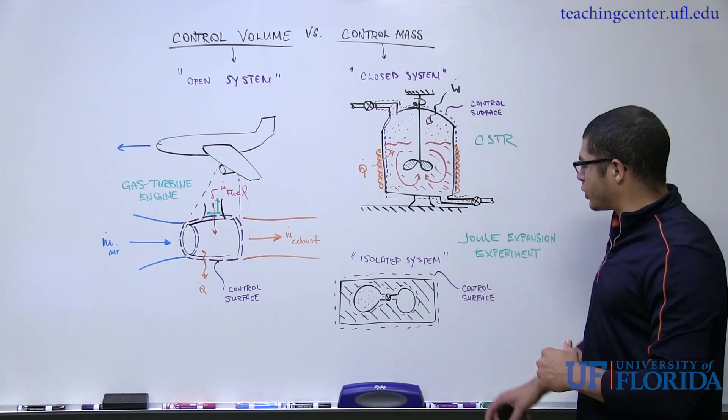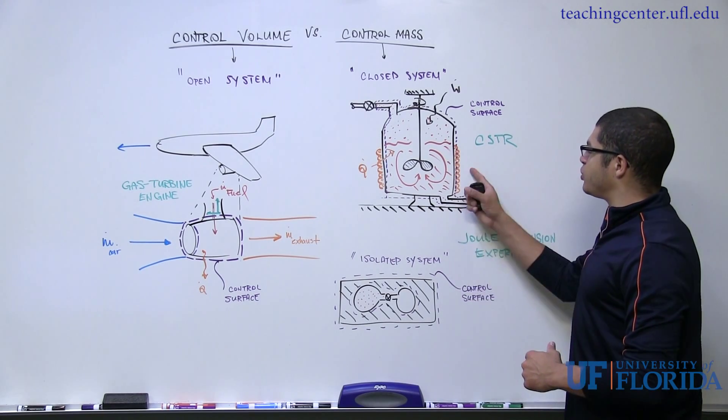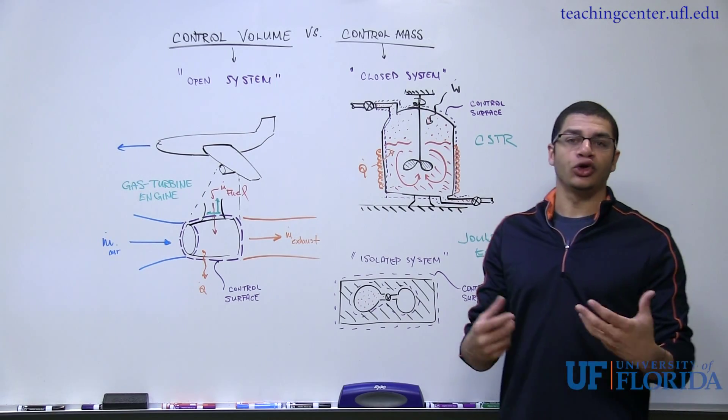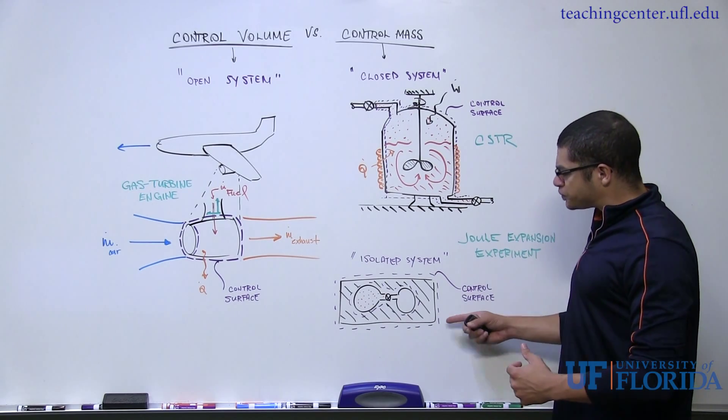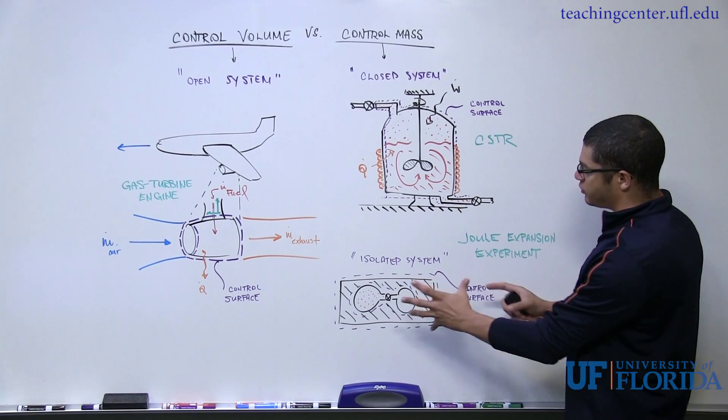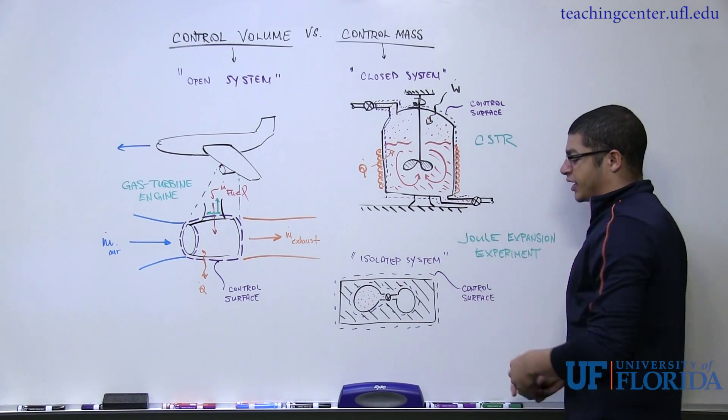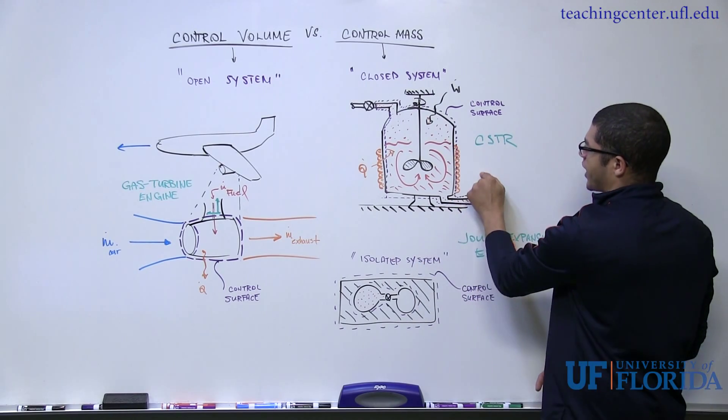Now if we relax the energetic interaction constraint, we can move up here to another example. So this is what's called a closed system or control mass. And again, the isolated system was a very specific sub-form of a closed system or control mass with the energy interaction constraint, which we're going to relax here.